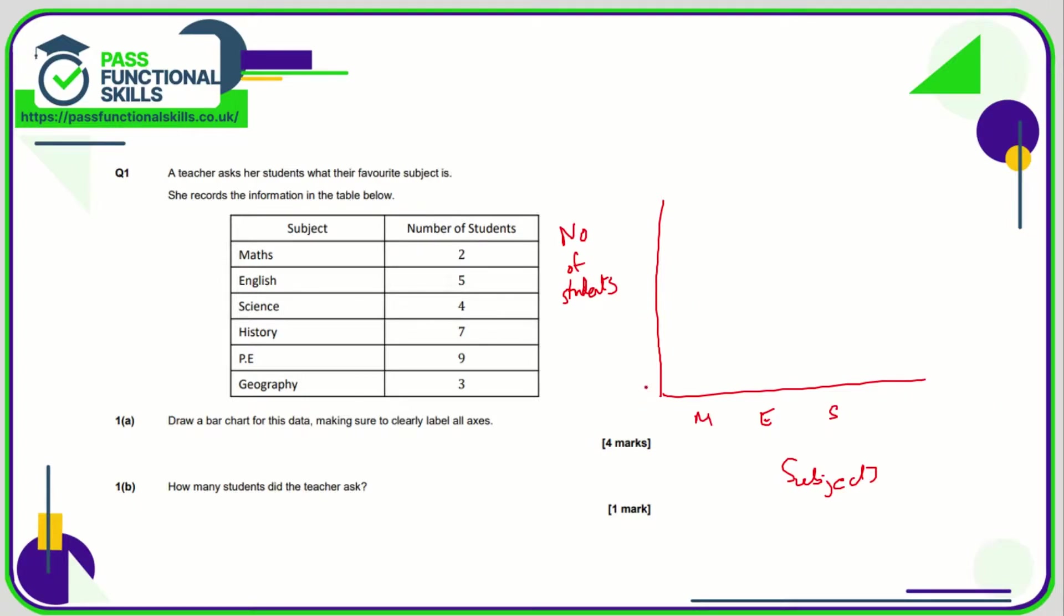Now the key thing is the scale. We're starting at zero, our maximum value is nine, so there's no point doing a scale from zero up to 100. We only need to go up to nine, but I would go a tiny bit beyond to ten. One, two, three, four, five, six, seven, eight, nine, ten.